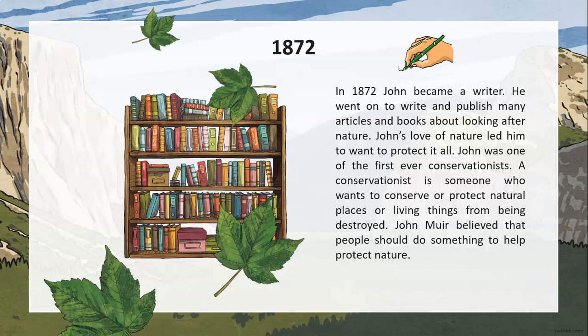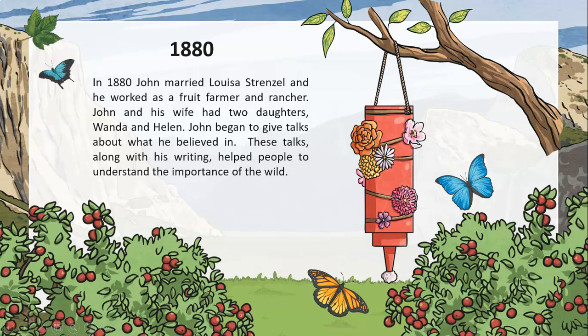John Muir believed that people should do something to help protect nature. In 1880, John married Louisa Strenzel and he worked as a fruit farmer and rancher. John and his wife had two daughters, Wanda and Helen. John began to give talks about what he believed in. These talks, along with his writing, helped people to understand the importance of the wild.